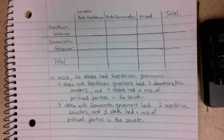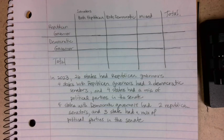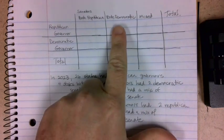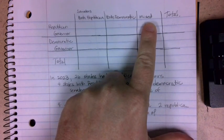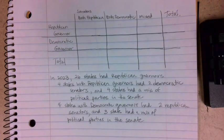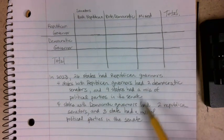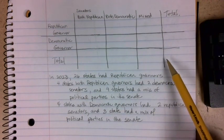Let's suppose we're interested in seeing the relationship between the political party of a governor and the political party of the senators that are elected. Every state has a governor and every state has two senators. The senators might both be Republican, both Democratic, or a mixed combination. Here's some information I was able to gather — let's put this into a contingency table.